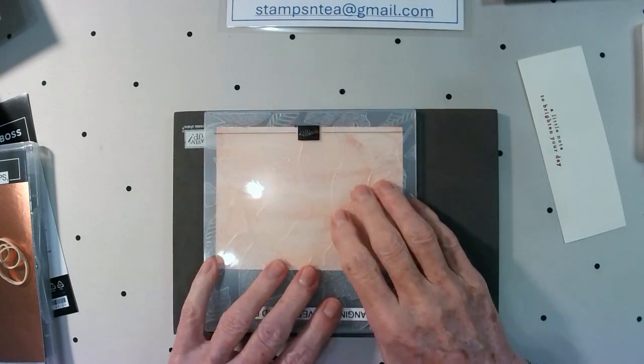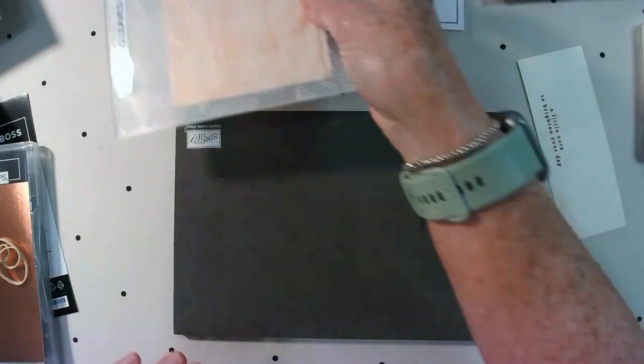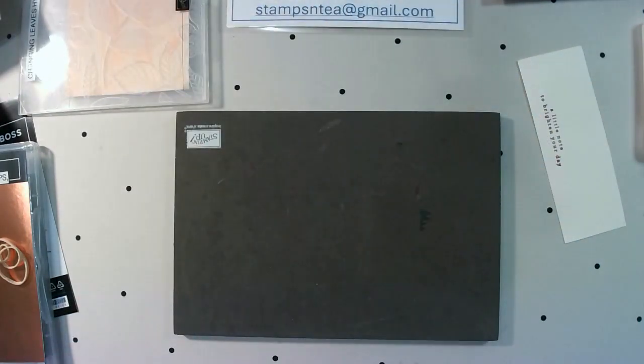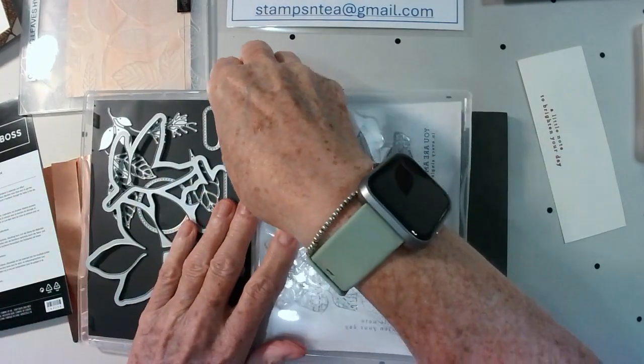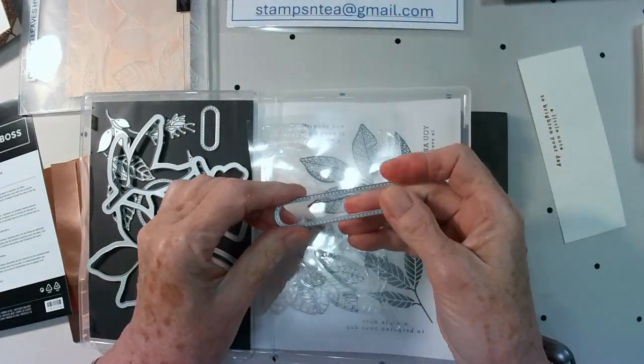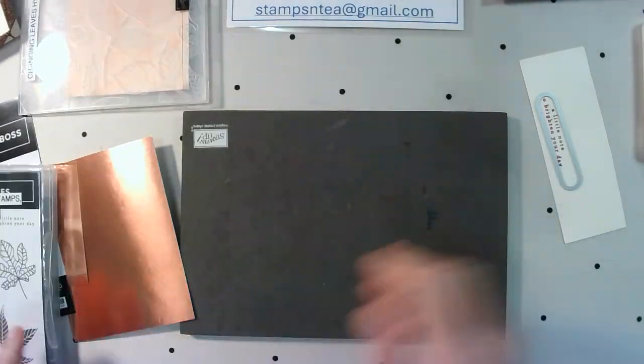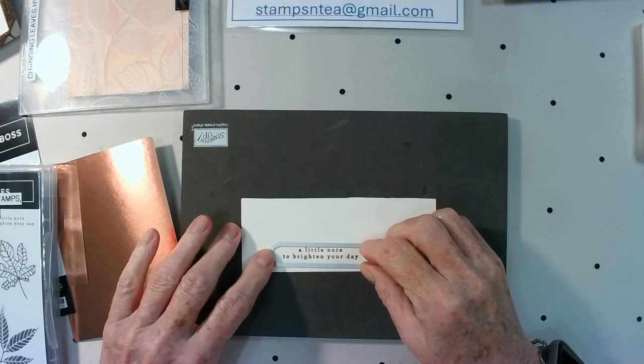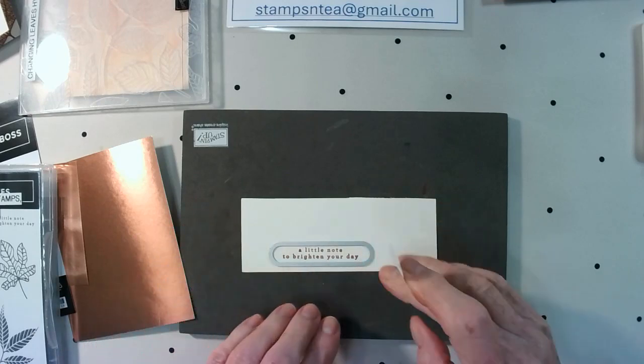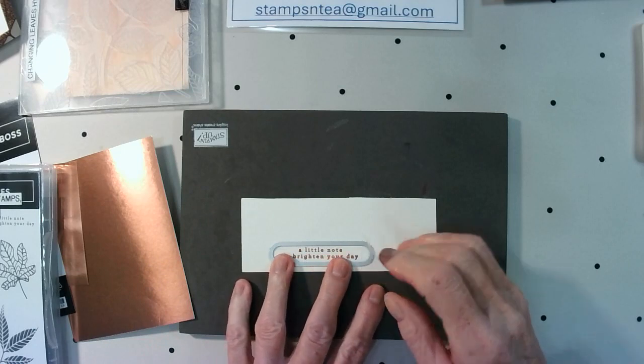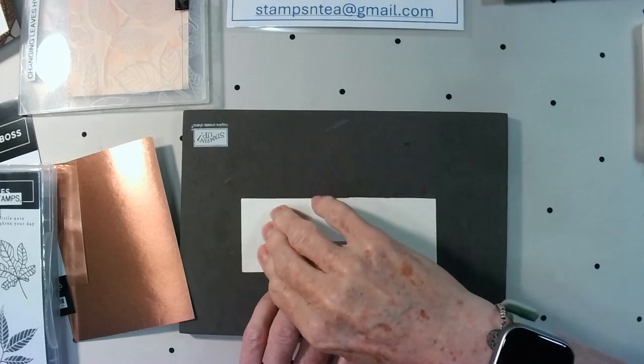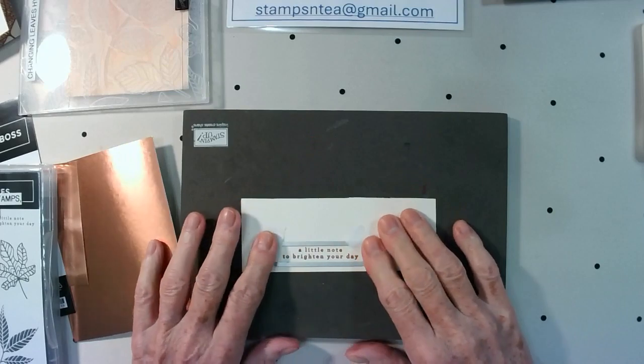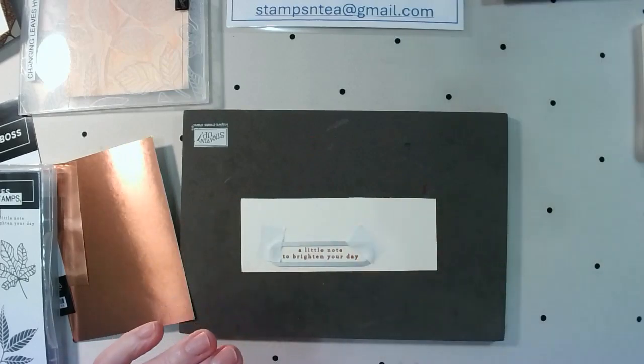So that's going over to the stamp and cut and emboss machine. But I'm also going to use one of the dies, this one here, to cut out my sentiment that we just stamped, this little sentiment here. So I'm going to tape that down because I want it to stay right where I put it. I don't want that to slide. Sometimes it doesn't matter if it slips a little bit, but I don't want it to slip. I'm now going over to the stamp and cut and emboss machine and I'll be right back.